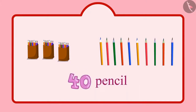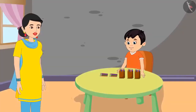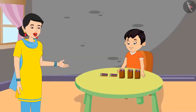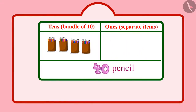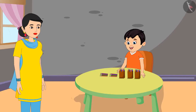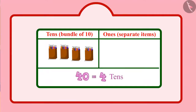So, now I have 40 pencils. Yes, Chotu, you are right. How many tens do you have now? Mummy, 40 pencils, meaning I have 4 tens. And units? Mummy, there are no units in 40. Yes, Chotu. There are only 4 tens in 40 and 0 units.